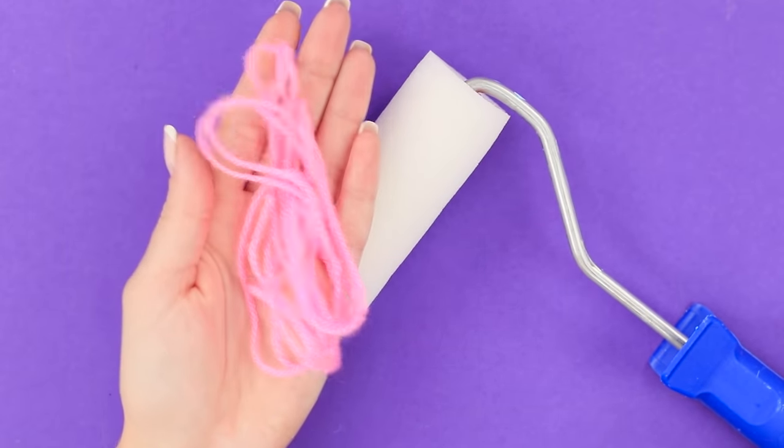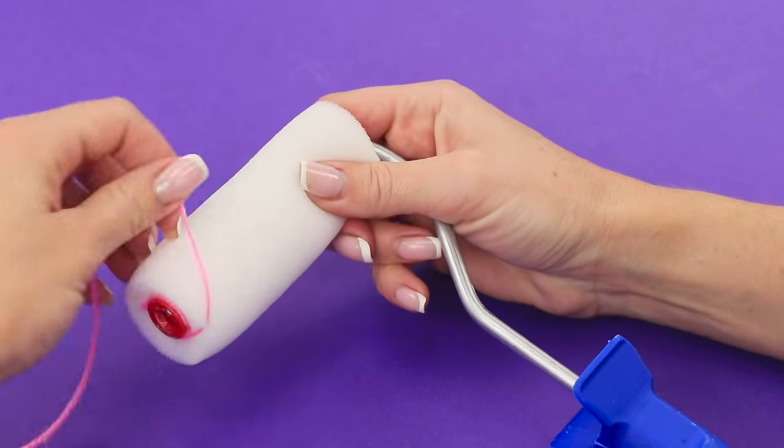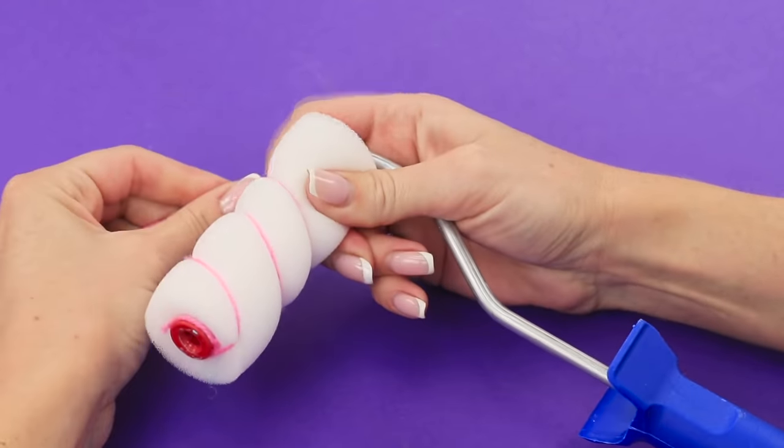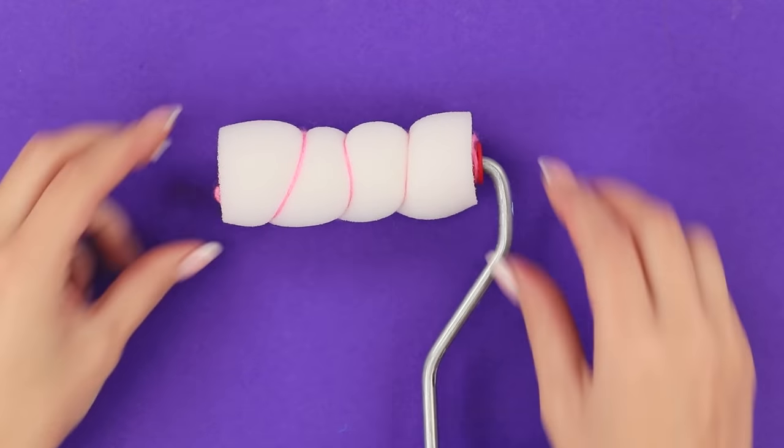For the next idea, take a regular roller and yarn. Tie the yarn around the roller like this. Dip it in paint and use it as intended. Whichever color you choose, the pattern on the wall will look better than if you used an ordinary roller.